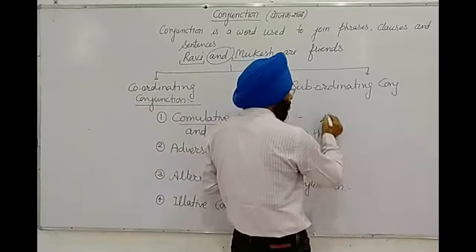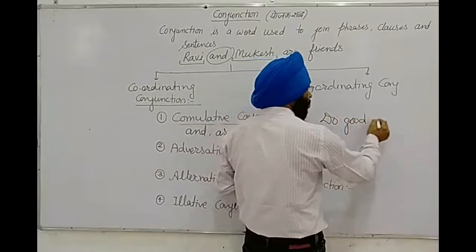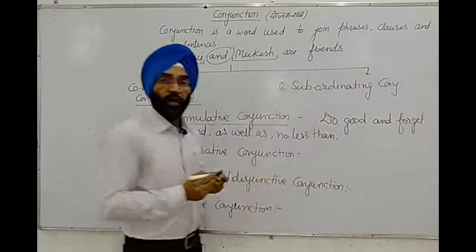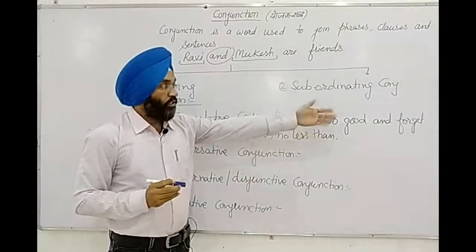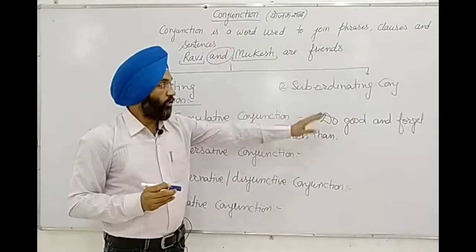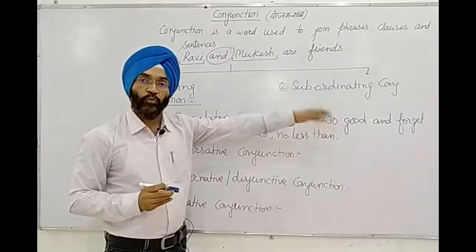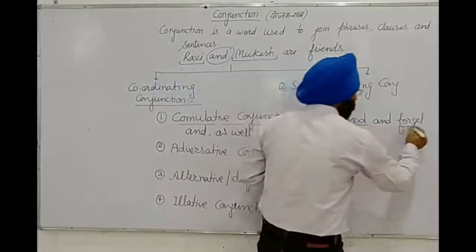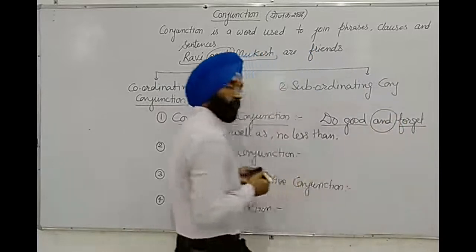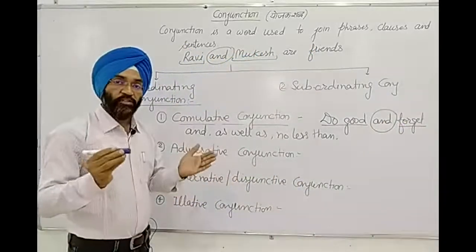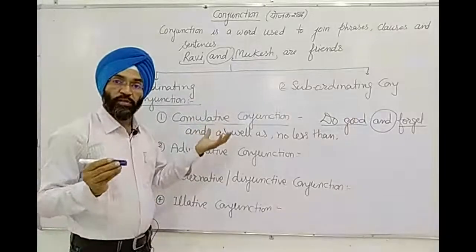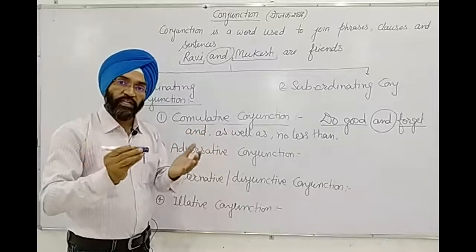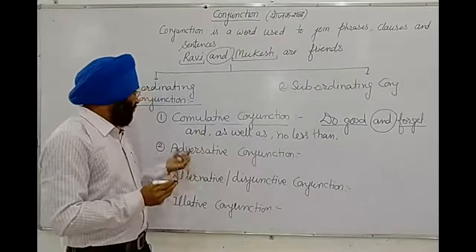Cumulative conjunction simply joins sentences without adding any special contrasting or alternative sense. Words used include: and, as well as, no less than, both...and, not only...but also. For example: 'Do good and forget.' Two ideas are simply joined — this is cumulative or copulative conjunction.